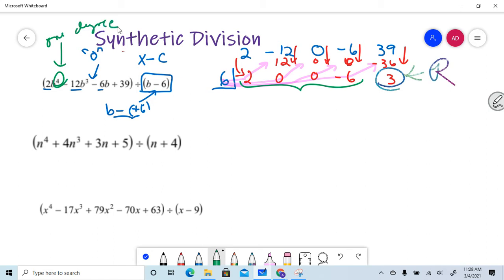So one degree less. Let me write less so you know what I'm talking about. So in other words, this becomes a 2x cubed, a 0x squared, a 0x, then minus six plus three, which is my remainder, over b minus six.